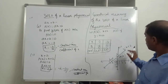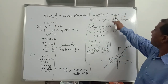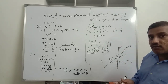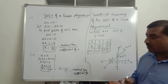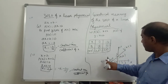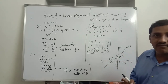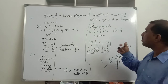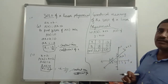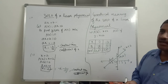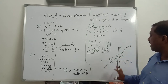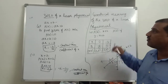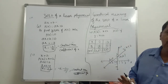So the geometrical meaning of the zero of a polynomial is: the x-coordinate of the point of intersection of the graph of the polynomial with the x-axis. The graph of a linear polynomial is always a straight line, and it intersects the x-axis at most at one point. That is why a linear polynomial has at most one zero.